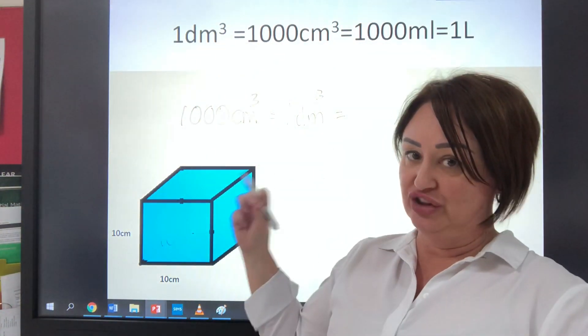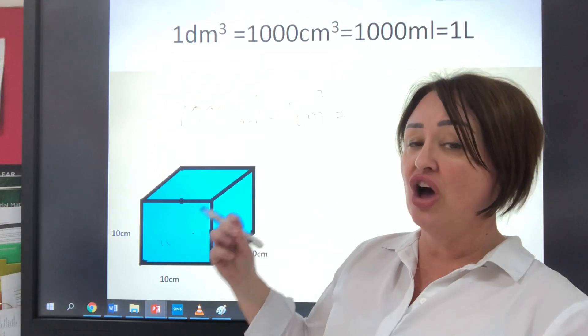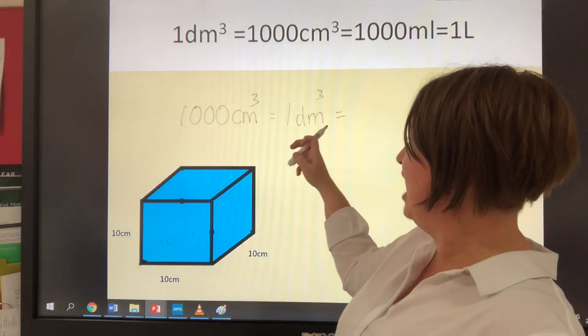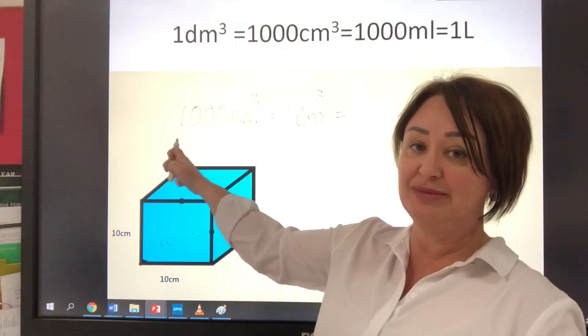Milliliter means thousandths. So it's a thousandth of a litre. Well, we've already just said that in a litre, there are a thousand centimetres.